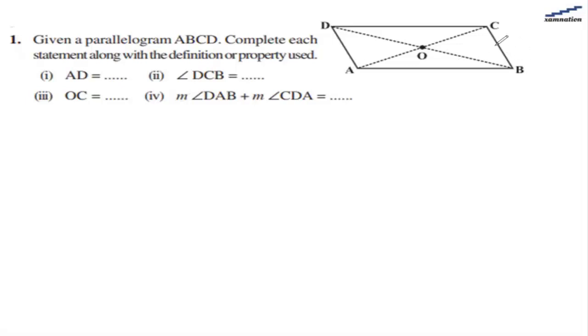AD is equal to BC because opposite sides are equal. What is angle DCB?